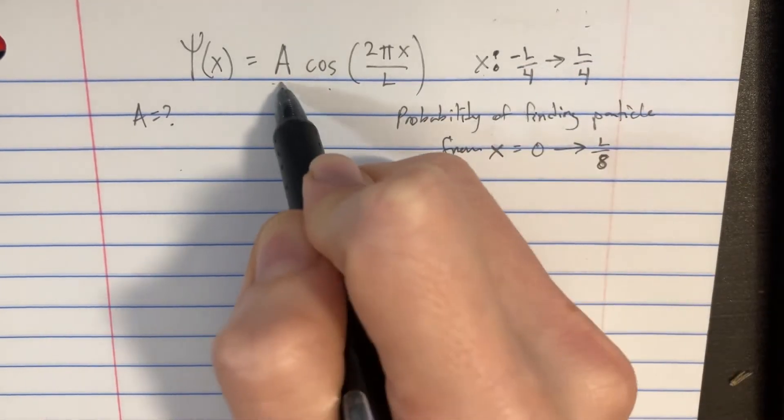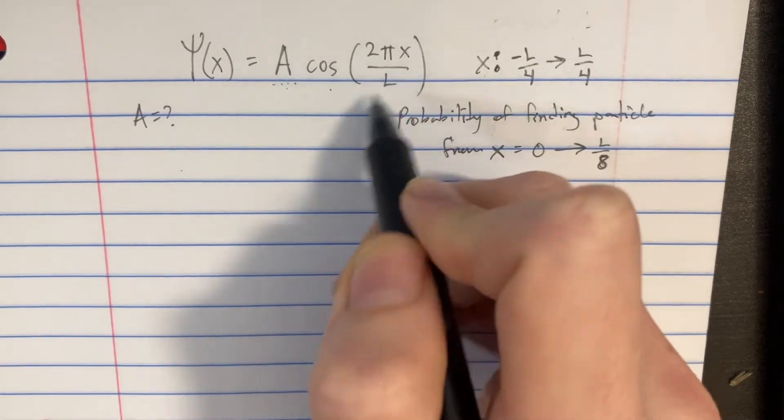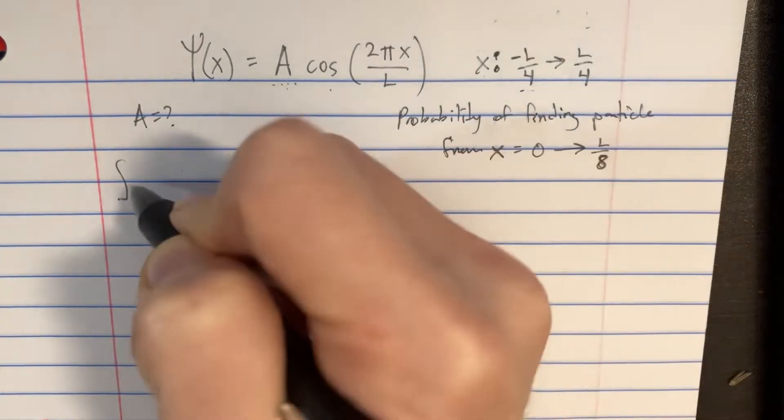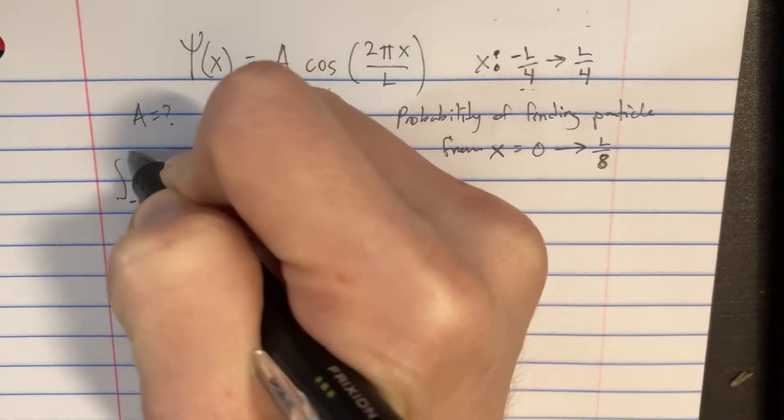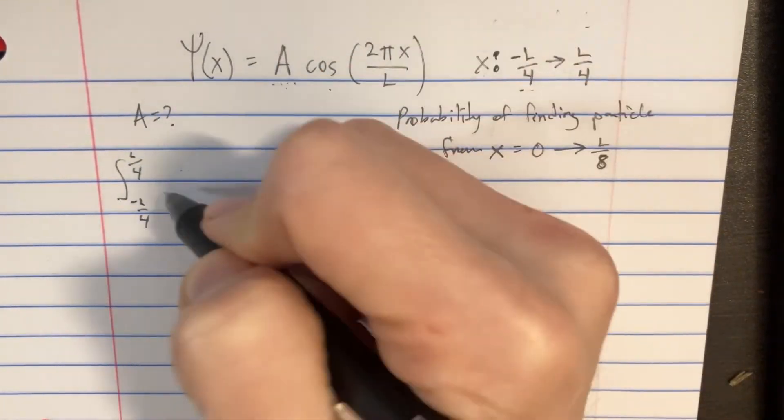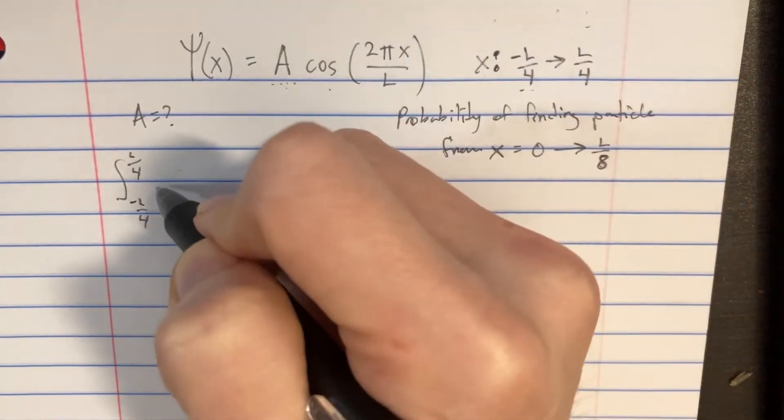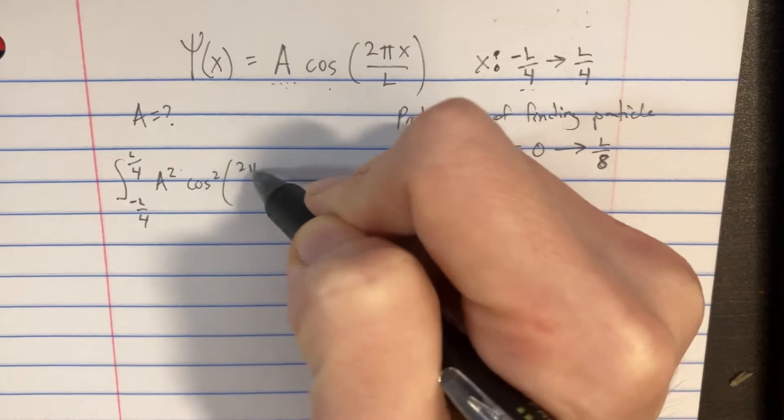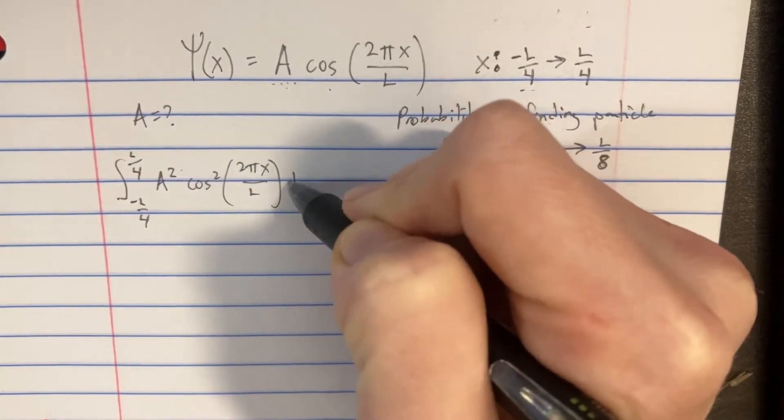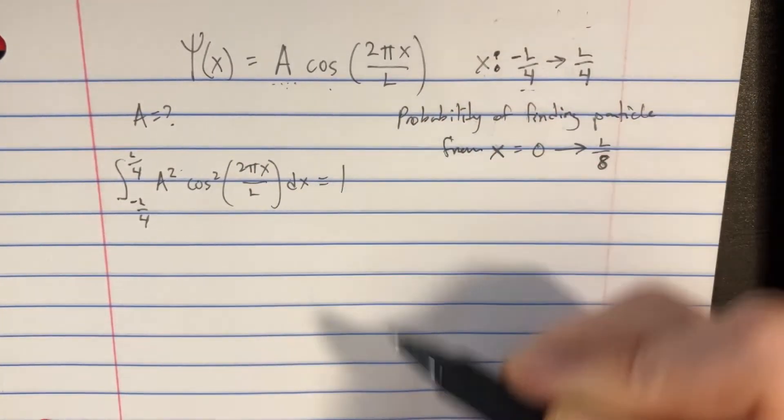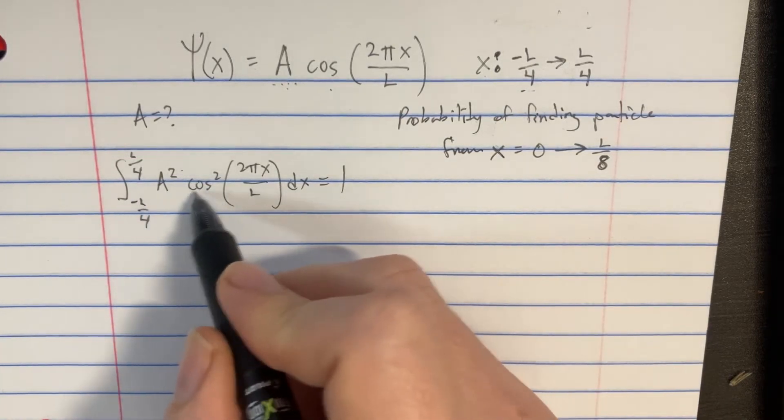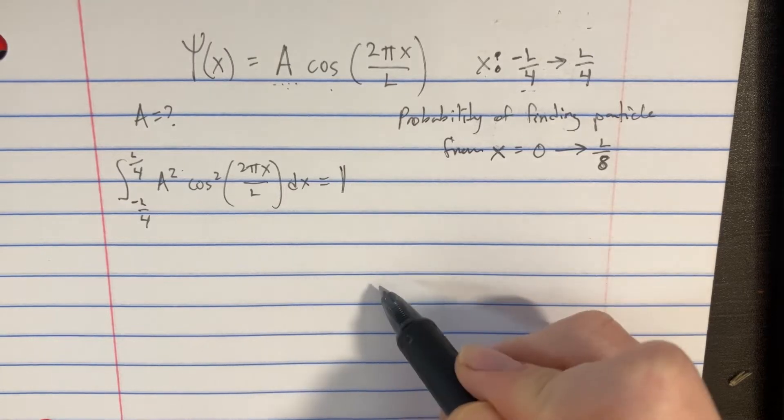So in order to find the amplitude, we're going to need to normalize this function, which involves taking an integral from the possible x's we have, negative L over 4 to L over 4. And then we have to square this whole thing, so it would be sort of like an A squared and a cosine squared 2πx over L, and we take that over dx. And we have to set that equal to 1 to make sure that the sum of all these possibilities is equal to 1 in total.